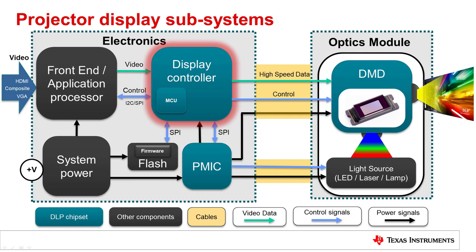A pixel is the smallest representable picture element. Individual pixels can be controlled by the DLP chipset. The display controller is the brain of the DLP chipset and performs the following functions.